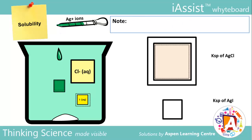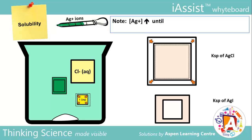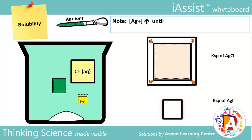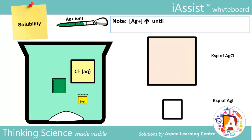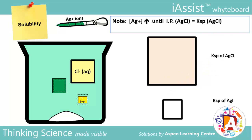This will continue until there comes a time when the increasing Ag⁺ concentration hits another important threshold. At this Ag⁺ concentration, IP of AgCl equals its Ksp, hence the beaker contains a saturated solution of both AgCl and AgI. This Ag⁺ concentration can therefore be used to calculate the I⁻ ion concentration remaining by equating IP to Ksp of AgI. With a few more simple calculations, the amount of AgI that has been precipitated out from the beginning can be obtained, thus giving the maximum separation of AgI and AgCl due to differential solubility.